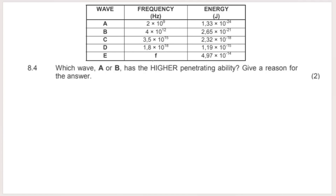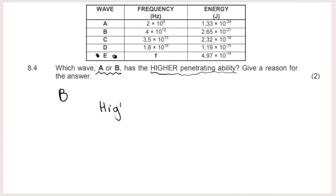Question 8.4 asks which wave has the higher penetrating ability. Penetrating ability is directly related to energy — higher energy means higher penetrating ability, which is why gamma rays (highest frequency, highest energy) penetrate most. Comparing waves A and B from the table: B has higher frequency, therefore higher energy, therefore higher penetrating ability. You can justify your answer using either highest frequency or highest energy.